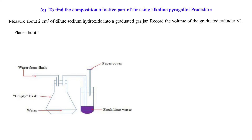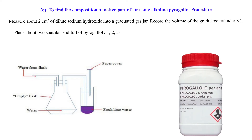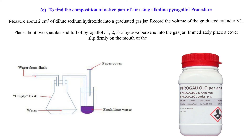Place about 2 spatulas-full of pyrogallol (1,2,3-trihydroxybenzene) into the gas jar. Immediately place a cover slip firmly on the mouth of the gas jar. Swirl thoroughly for about 2 minutes.